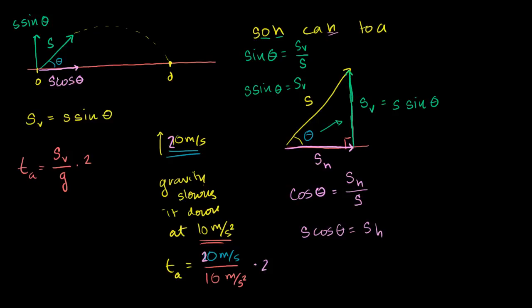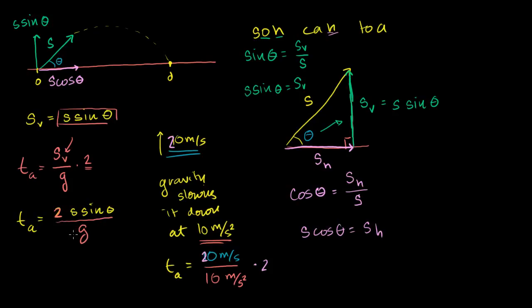We already know the vertical component for our problem: it is s sine of theta. So substituting back in, the time in the air is 2 times s sine theta, all divided by the acceleration of gravity. For example, if the object is launched at 100 meters per second and theta is 30 degrees, then sine of theta is 1/2. So it would be 2 times 100 times 1/2 divided by g — that tells you exactly how long the object is in the air: time to go up, become stationary, and fall back to the ground.